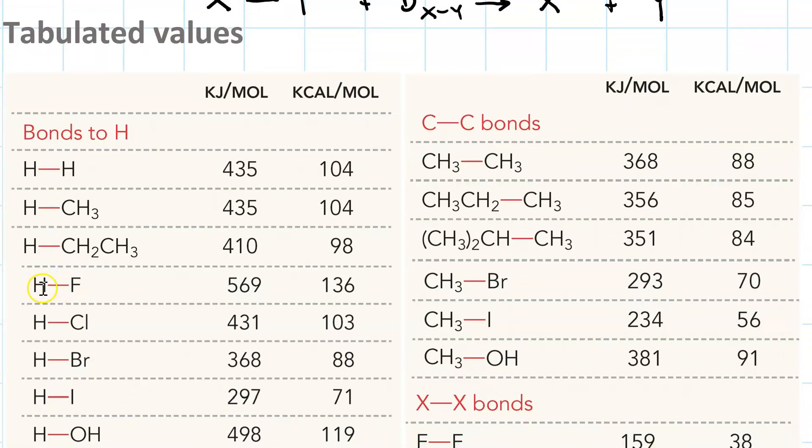In terms of breaking the bond between H and F in hydrogen fluoride, that's very expensive at 569 kilojoules per mole. For HCl it costs less, for HBr still less, for HI still less. But H-O in water is very hard to break.